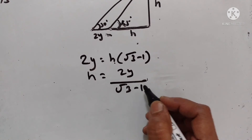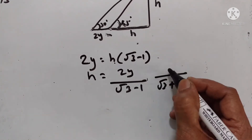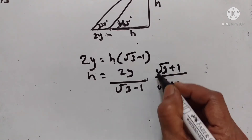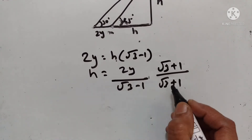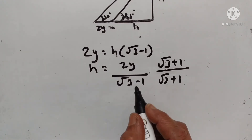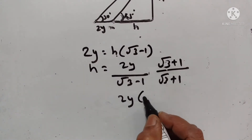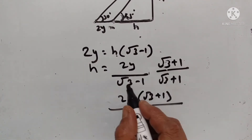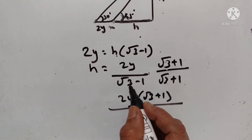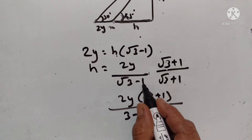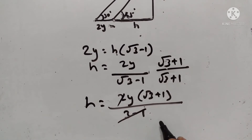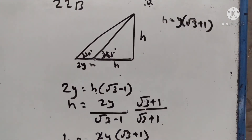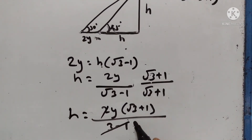Rationalize the denominator by multiplying by square root of 3 plus 1 over square root of 3 plus 1, so that the whole value remains 1. Using the identity a minus b into a plus b equals a squared minus b squared: this gives 2y into square root of 3 plus 1, upon 3 minus 1, which equals 2. The 2s cancel, so h is equal to y into square root of 3 plus 1. We have proved that the height is equal to y into square root of 3 plus 1.